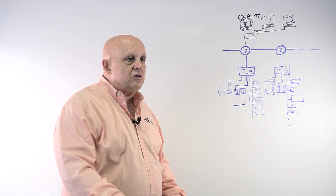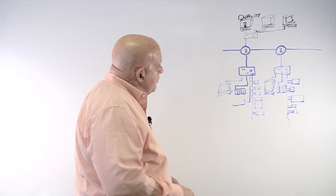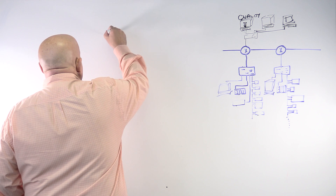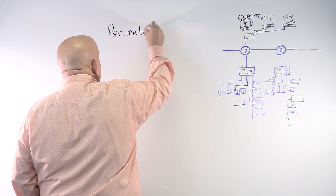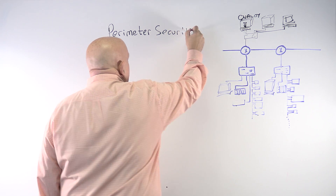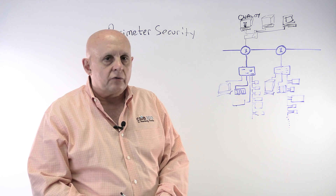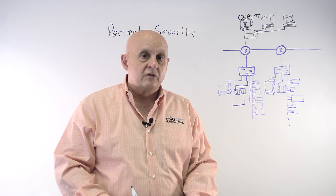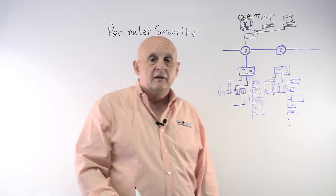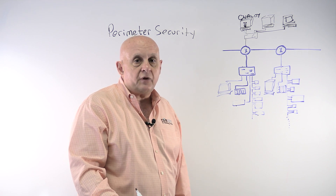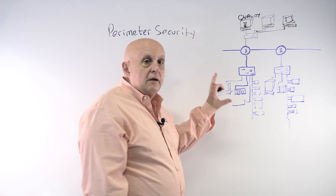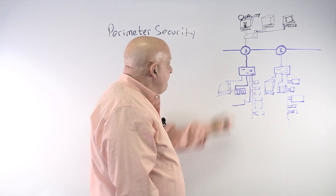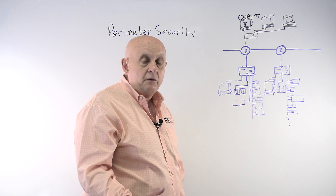One of the first things we have to understand is perimeter security. I've talked a lot about perimeter security over the years. When they built castles in the third century, they put a moat around it, had a drawbridge, and one entrance in and out — because they could watch it very intensely and make sure the enemy didn't come through. Same thing here with a manufacturing system: we want perimeter security to ensure everything coming in and out is traffic we want.